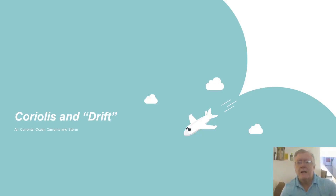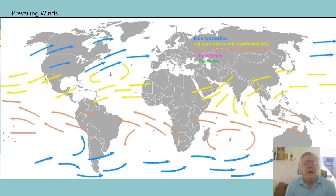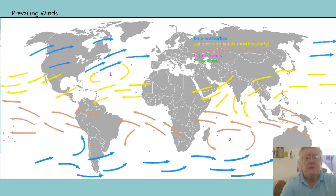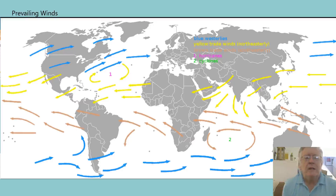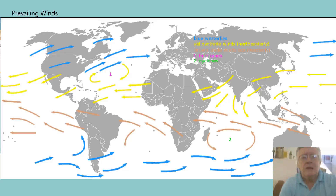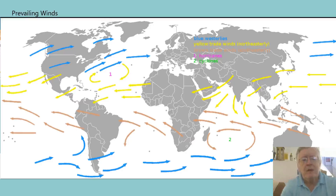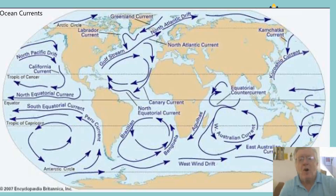These are some quick slides I wanted to show you for comparison from last week. These show the prevailing global winds and how they move in the northern hemisphere, following the Coriolis effect. Close to the equator are the trade winds in yellow, and the Easterlies in blue going east. In the southern hemisphere we have the trade winds and Easterlies as well.